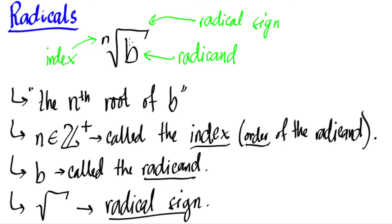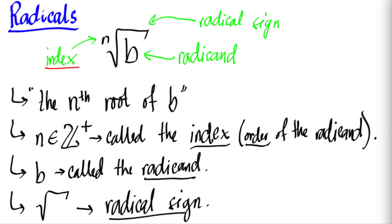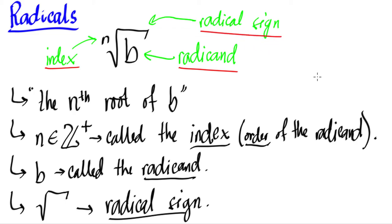This is a radical — the name for this kind of number where you see this kind of sign. This is read as the nth root of b, where n and b are integers. Strictly, n must be a positive integer. We call n the index, or also the order, of the radical. b, which is inside the radical sign, we call the radicand. And this symbol is what we call the radical sign.